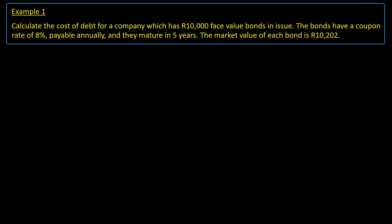We start with the timeline which has annual notches because the coupons are paid annually. Therefore, we count years starting at 0 which is today and ending at 5 which is maturity date. Then we fill in the bond's market value today as negative R10,202.